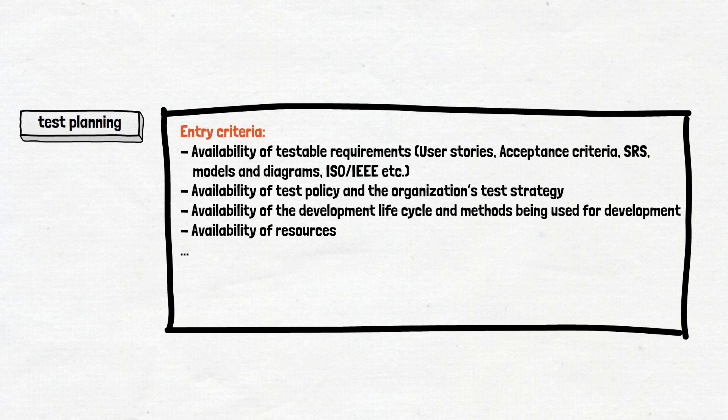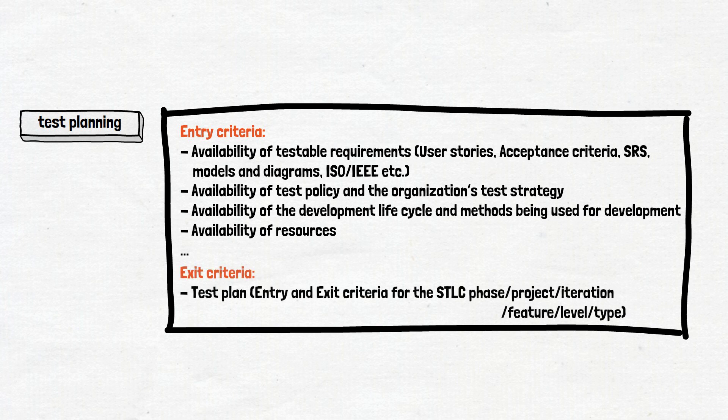Requirements can be user stories, software requirement specifications, or even ISO standards — what resources are allocated for testing and much other important information. When this information is available, the test expert writes a document called a test plan. In that document, the test expert needs to answer a lot of questions: what is the scope and what's out of scope for this testing effort, and what constraints affect testing. What is important for us within the scope of this video: the test expert must determine the entry and exit criteria for each of the stages of the testing process.